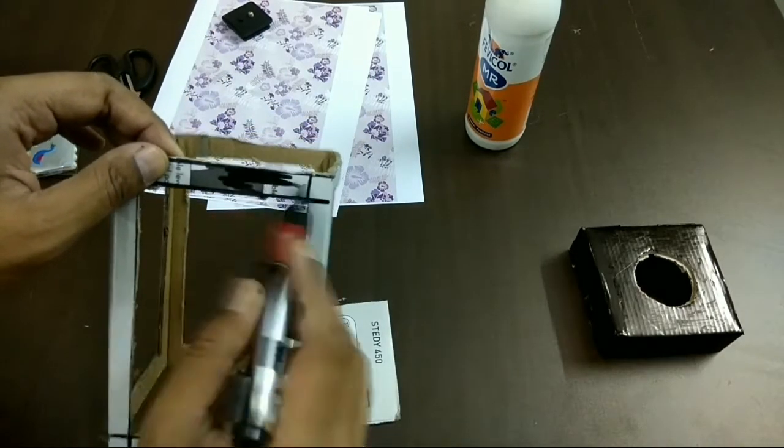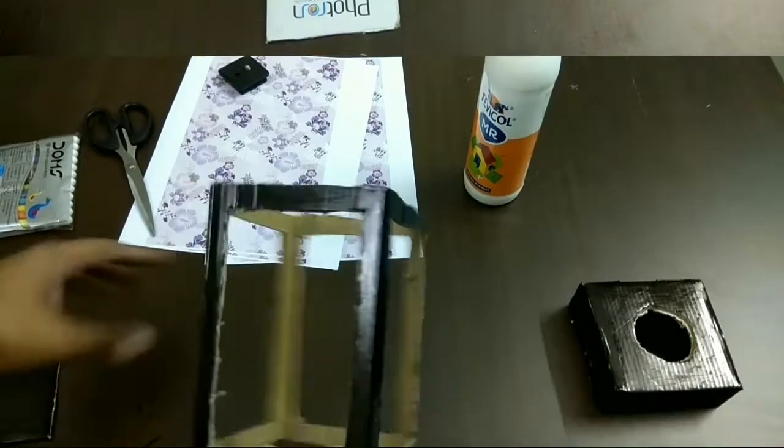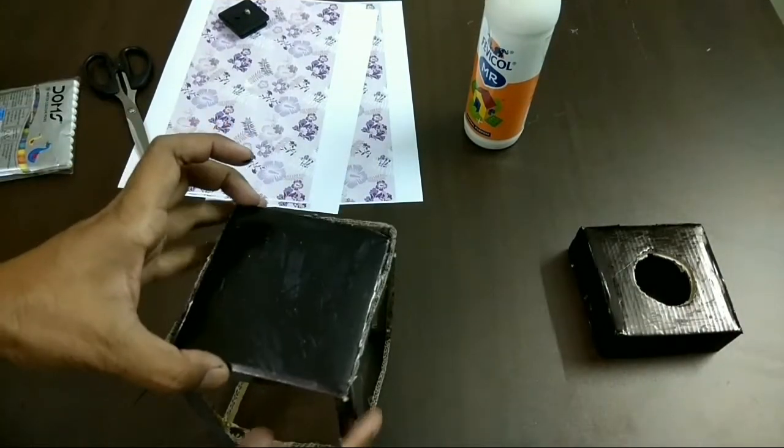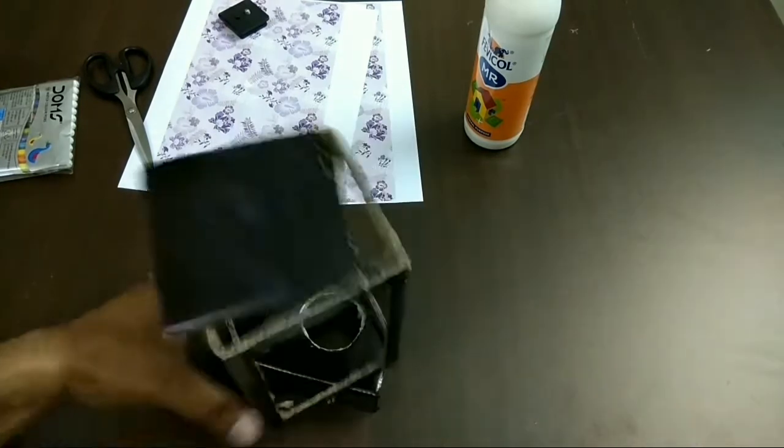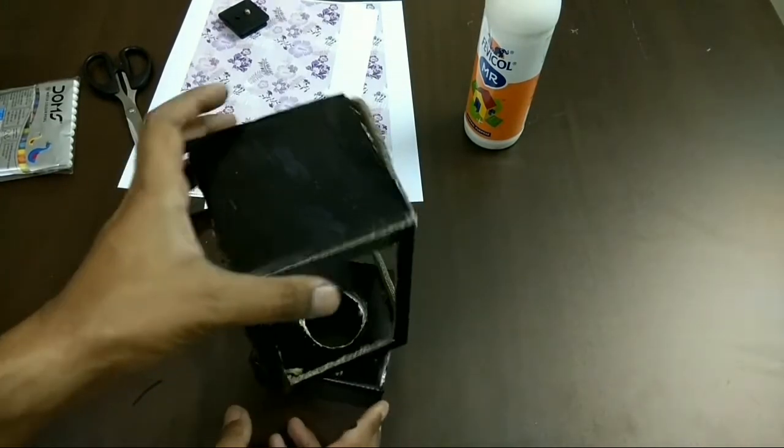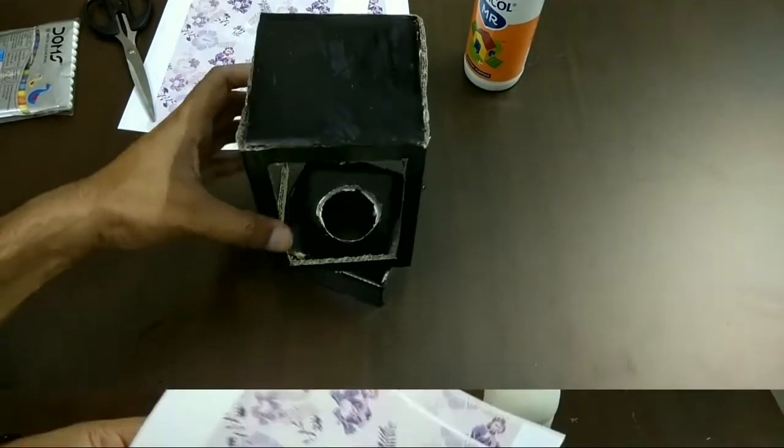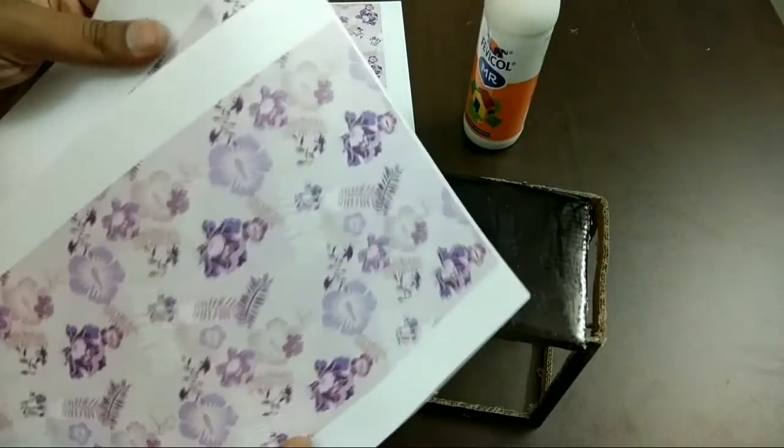Now using the black permanent marker again you have to paint all the sides. See, this would be the assembly. So now we just have to fix all the sides.